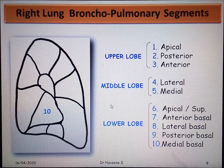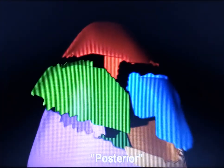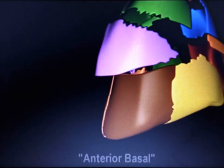Let's see a video clip showing the arrangement of these bronchopulmonary segments in the right lung. Upper lobe segments: anterior, posterior, apical. Middle lobe: medial and lateral. Lower lobe: apical or superior, anterior basal, posterior basal, lateral basal, and medial basal.